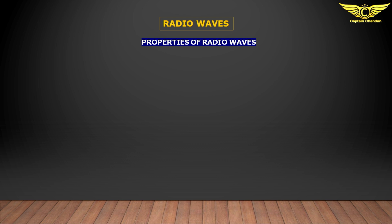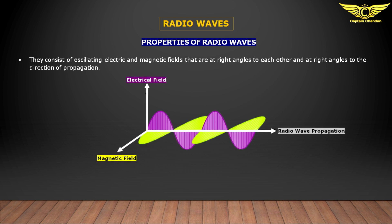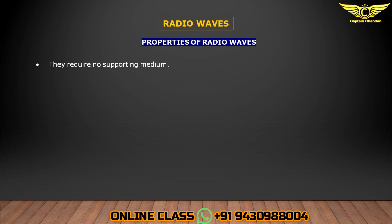Properties of radio wave: they consist of oscillating electric and magnetic fields that are at right angles to each other and at right angles to the direction of propagation — as we already discussed, the electrical field, magnetic field, and radio wave propagation are all at 90 degrees to each other.